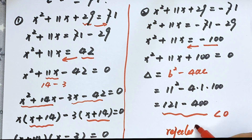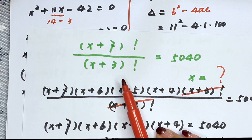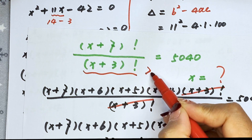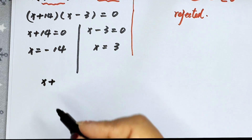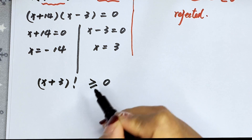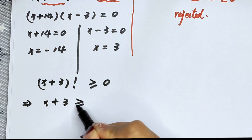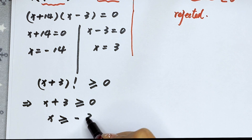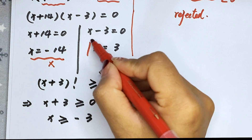Because our equation has (x plus 3) factorial in the denominator, the value must satisfy x plus 3 greater than or equal to 0, meaning x is greater than or equal to negative 3. Therefore x equals negative 14 is rejected, and x equals 3 is the final answer.